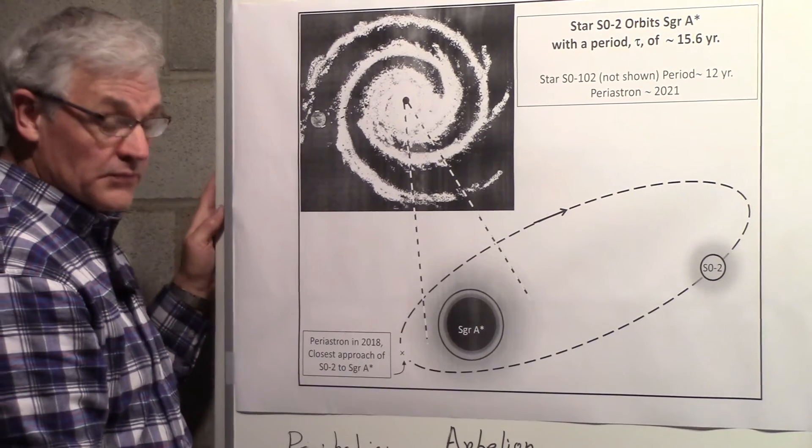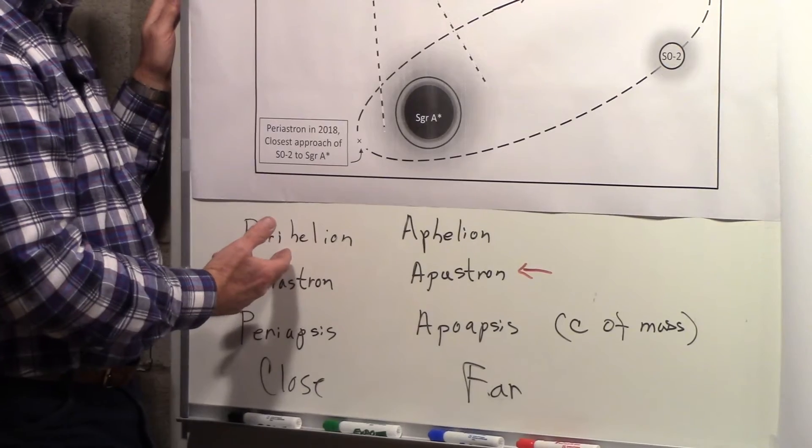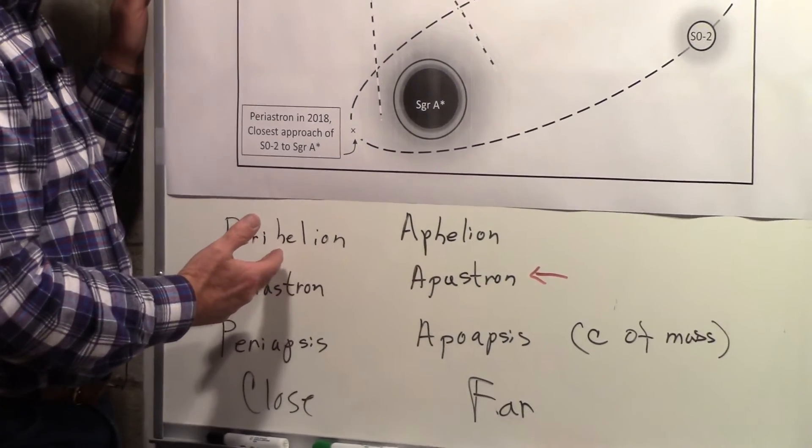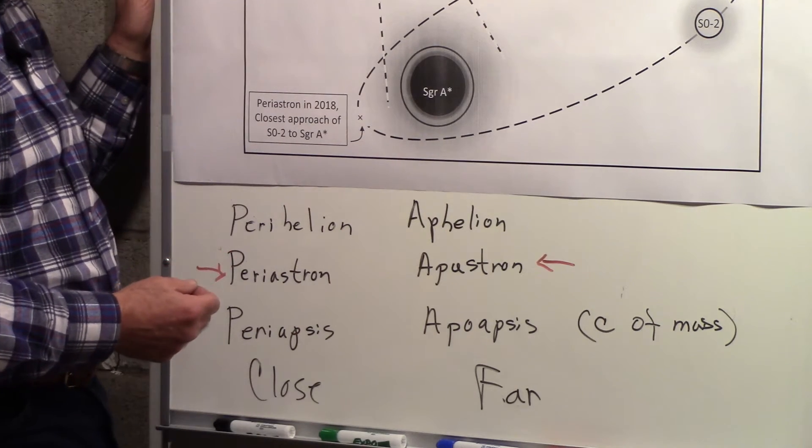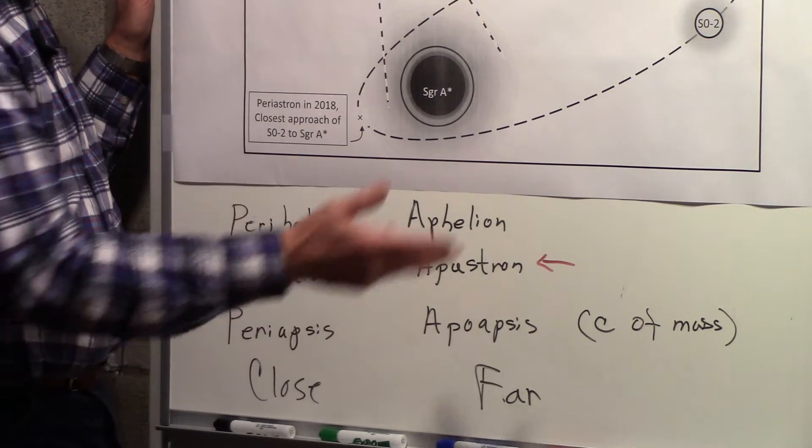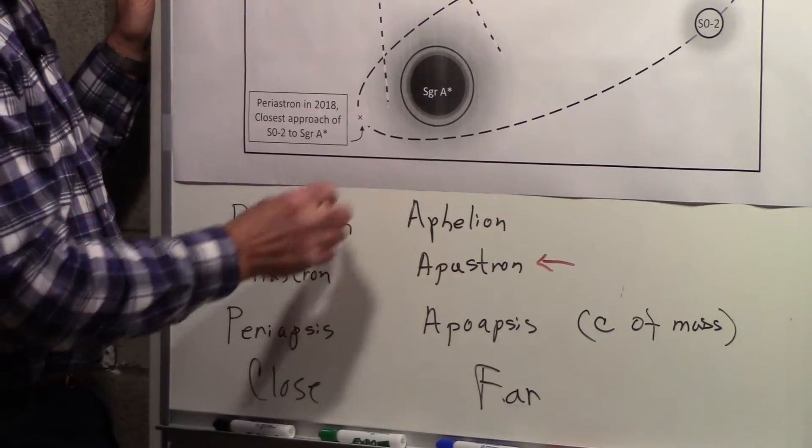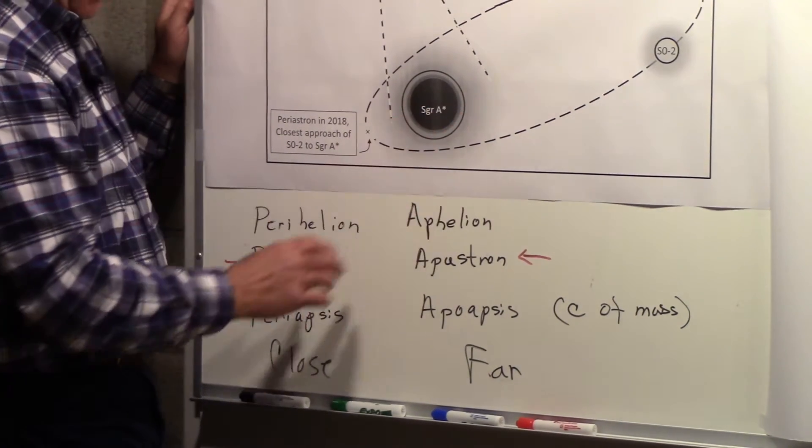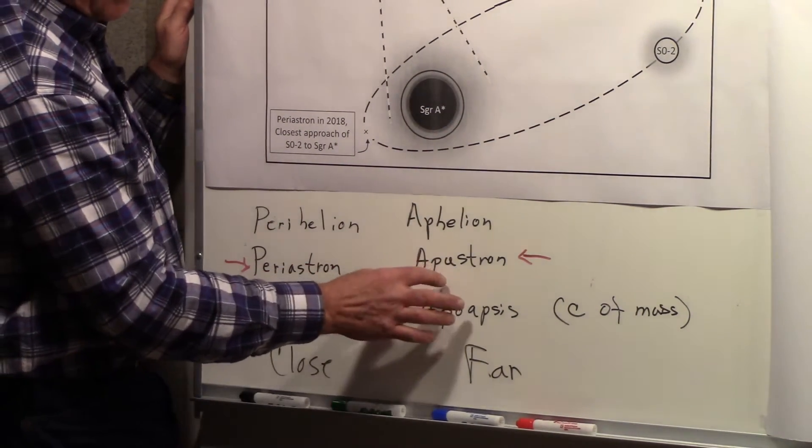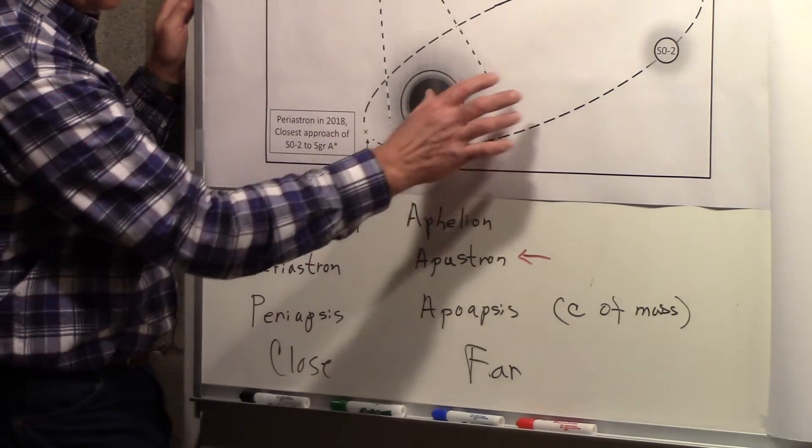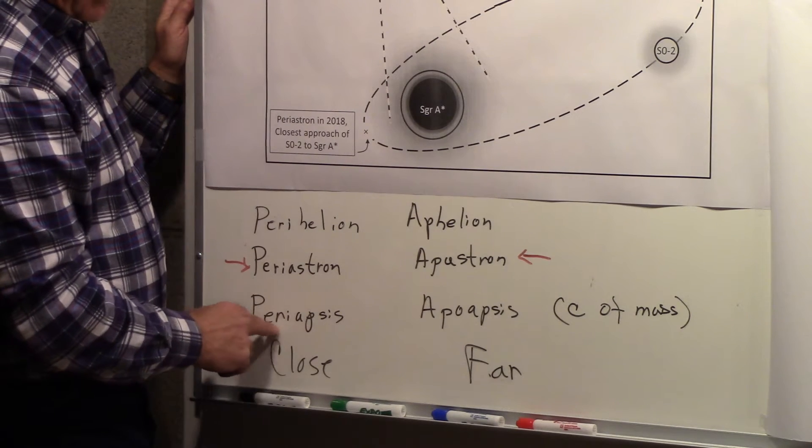I want to go over a couple terms. When the Earth is close to the Sun we call that perihelion. When the Earth is far from the Sun we call that aphelion. When a star is close to another star or when a star is close to a black hole, the closest point of approach is periastron and the furthest point of approach is apastron.